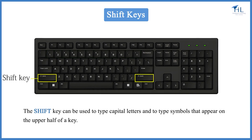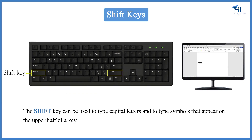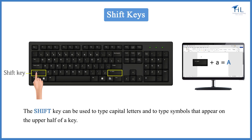The shift key works when you press and hold it down while pressing another key. For example, shift plus small 'a' gives capital A. To type the upper symbol on the key, you need to press and hold the shift key along with the symbol key. Shift plus 1 gives exclamation.